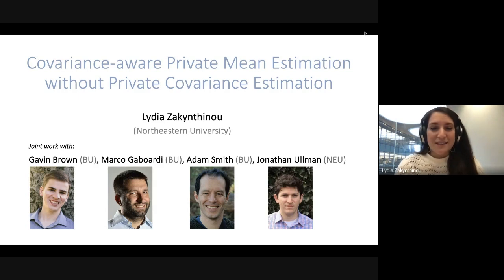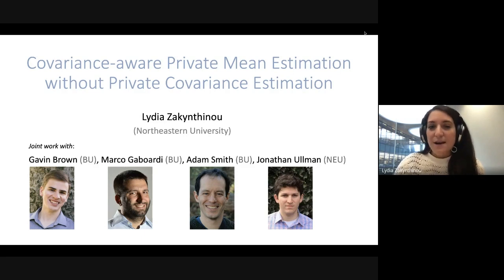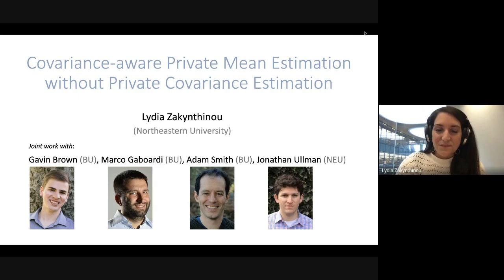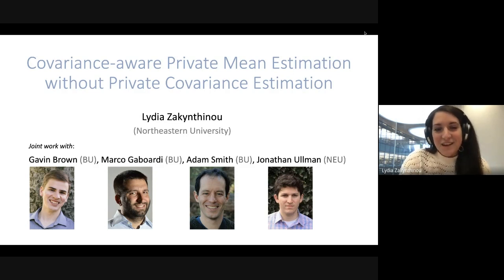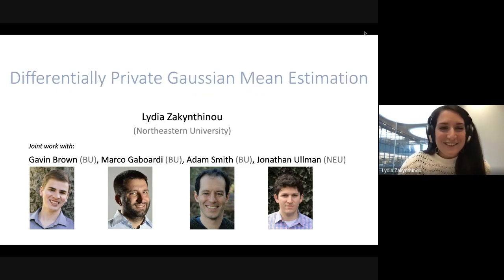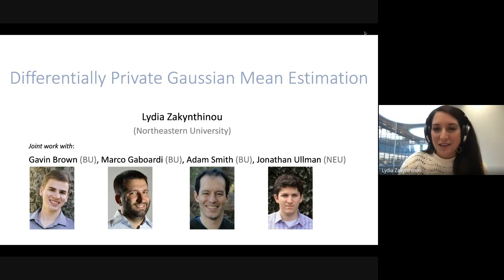Today I want to talk about this new paper, which is joint work with Gavin Brown, Marco Gabardi, and Adam Smith from Boston University, and my advisor John Allman from Northeastern. This paper is called 'Covariance-Aware Private Mean Estimation Without Private Covariance Estimation,' but maybe a less fancy title is differentially private Gaussian mean estimation.